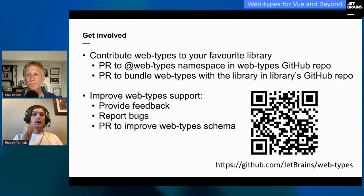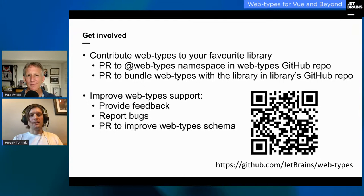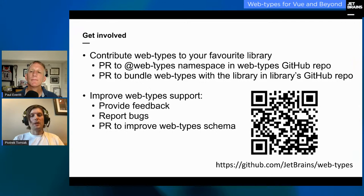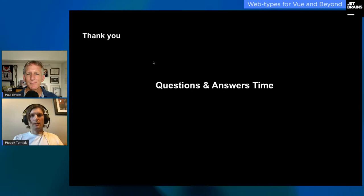How can you get involved? You can write web types for your favorite library — maybe wait a little bit until the support gets out of technical preview phase. You can definitely improve web type support at this point by providing feedback in our GitHub repository. You can report bugs and also improve the web type schema — maybe with documentation, maybe with new features. Thank you very much, and basically this is a time for the last phase of questions and answers.